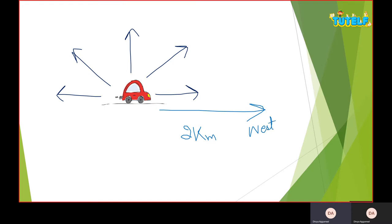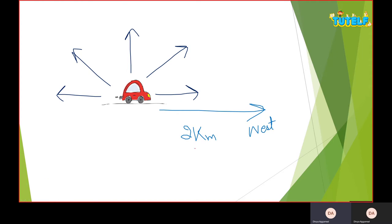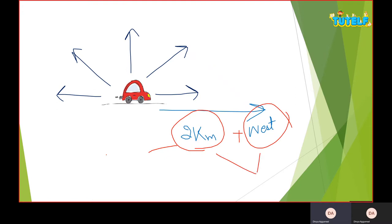When I just say two kilometers, I'm mentioning only the magnitude — a one-dimensional perspective — and that gives us a scalar quantity. If I add a direction to it, it becomes two-dimensional and we have a vector quantity. So when I mention distance alone, it is two kilometers and it's scalar. When I give direction along with distance, it becomes displacement and it's a vector quantity.